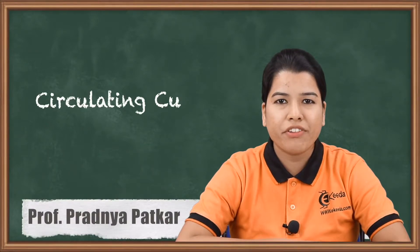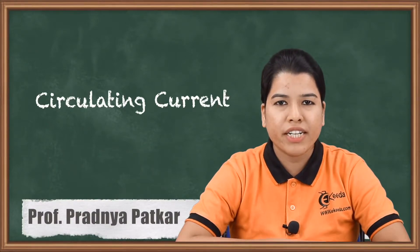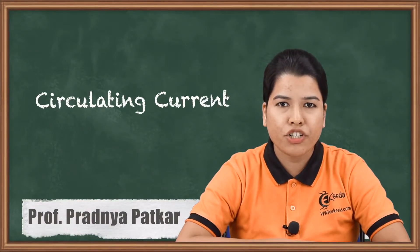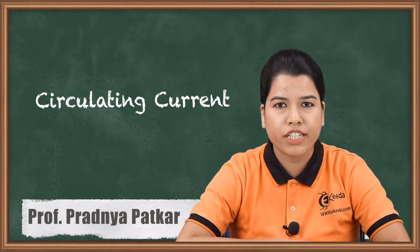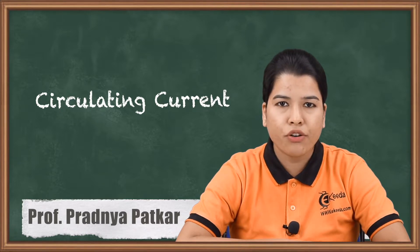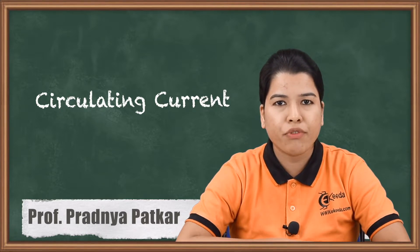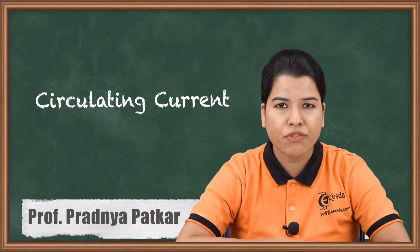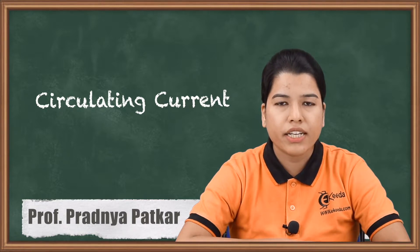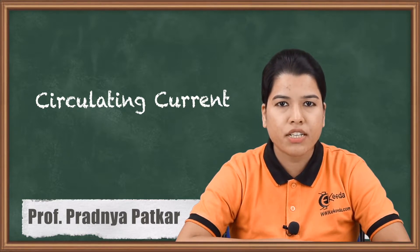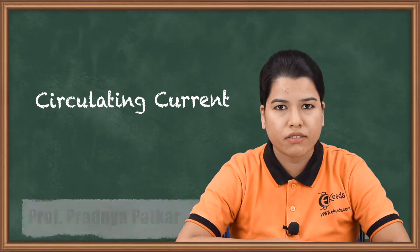Hello friends. In the previous video we studied the parallel operation of transformers for unequal voltage ratios, where we derived the equations for the current of both transformers, Ia and Ib. In this video we are going to study about the circulating current.